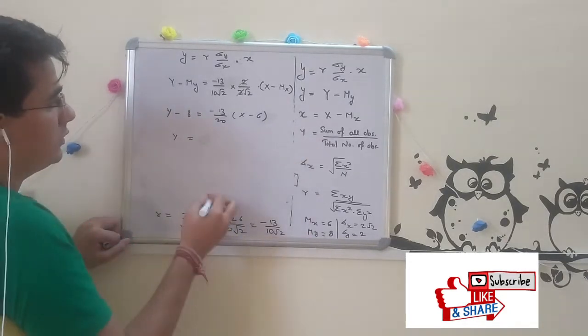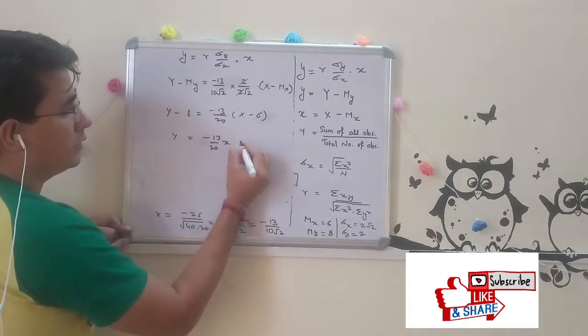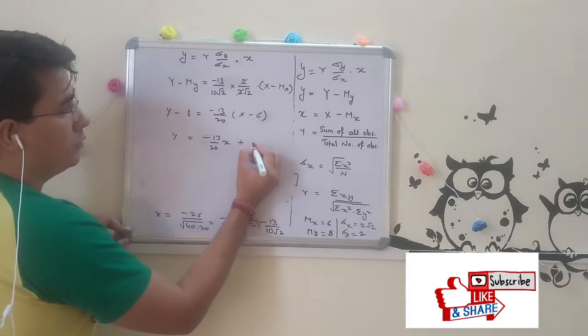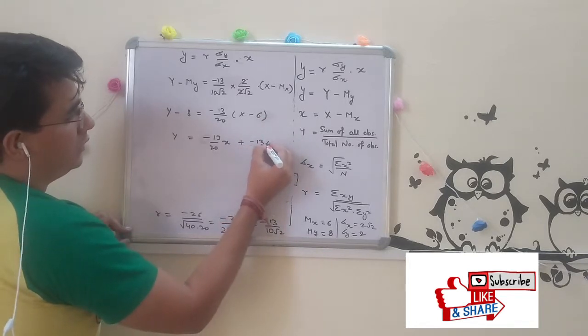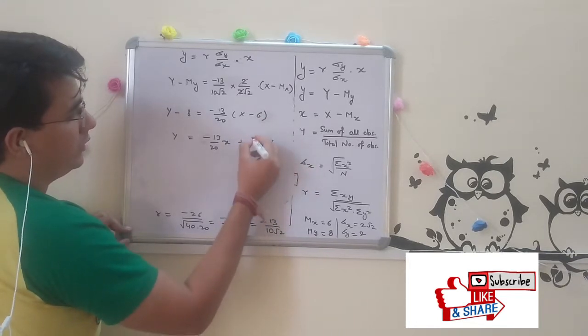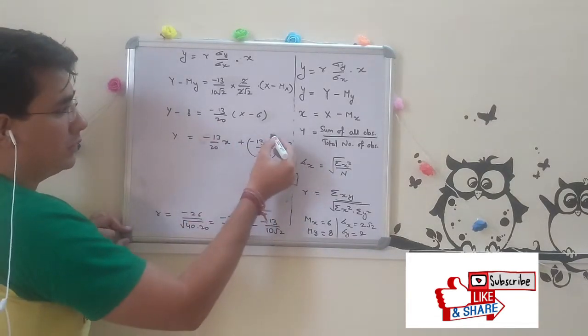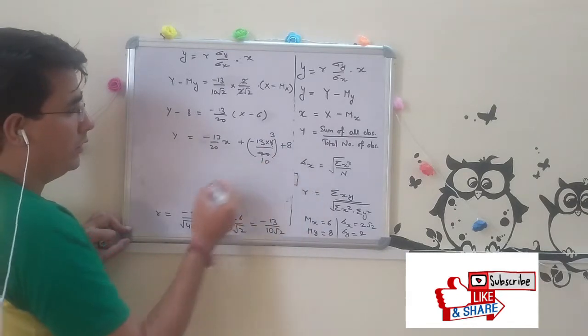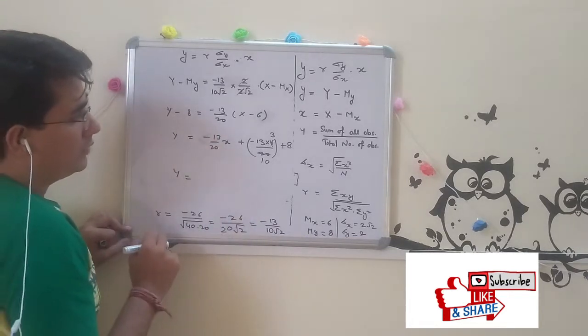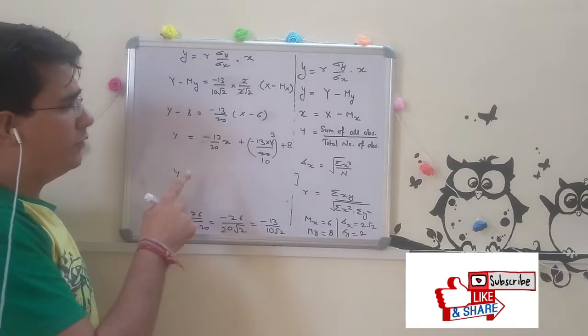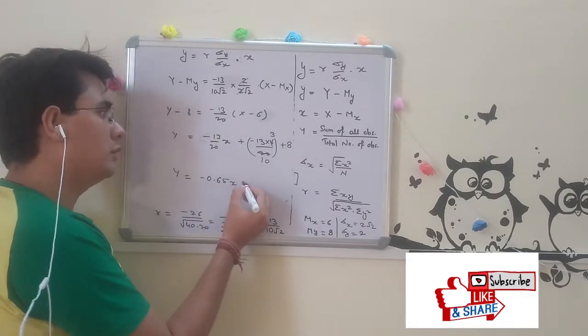Taking minus to the other side: Y = minus 13 upon 20 times X plus (minus 13 times 6 upon 20) plus 8. Then you cancel and divide this, you will get minus 0.65 X.